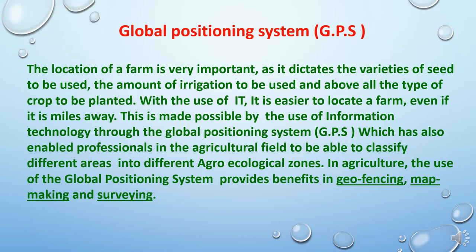Another role is the Global Positioning System (GPS). The location of a farm is very important as it dictates the varieties of seed to be used, the amount of irrigation to be used, and above all the type of crop to be planted. With the use of information technology, it is easier to locate a farm even if it is miles away. This is made possible by the GPS, which has also enabled professionals in the agricultural field to classify different areas into different agroecological zones. In agriculture, the use of GPS provides benefits in geofencing, map making, and surveying.